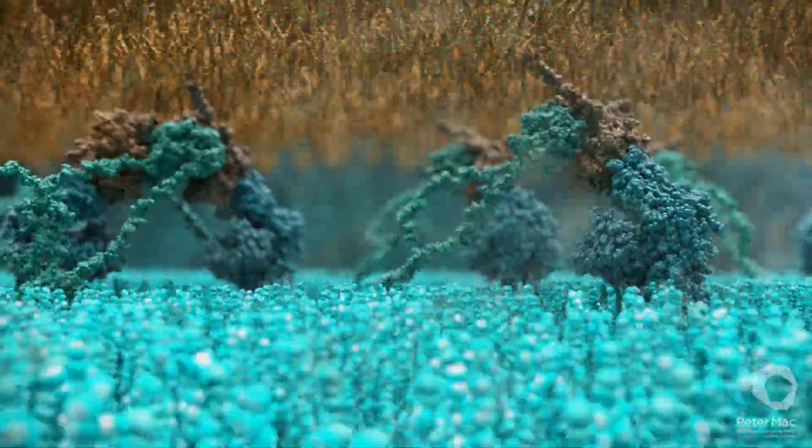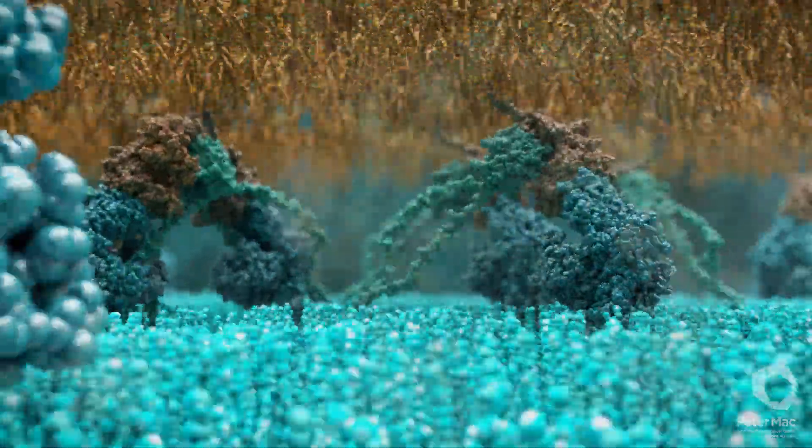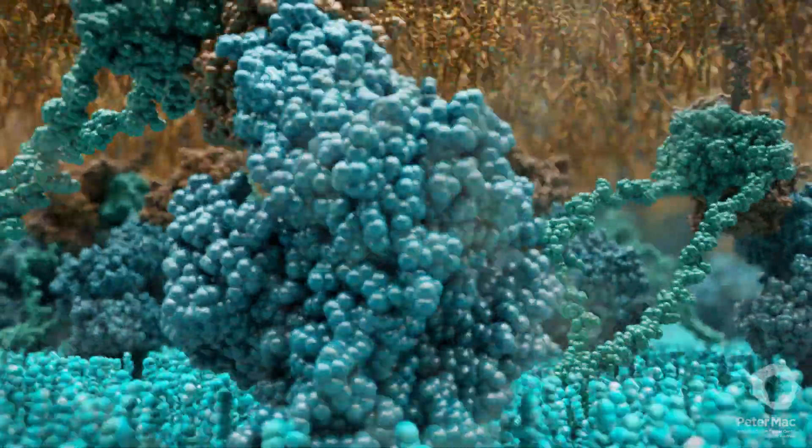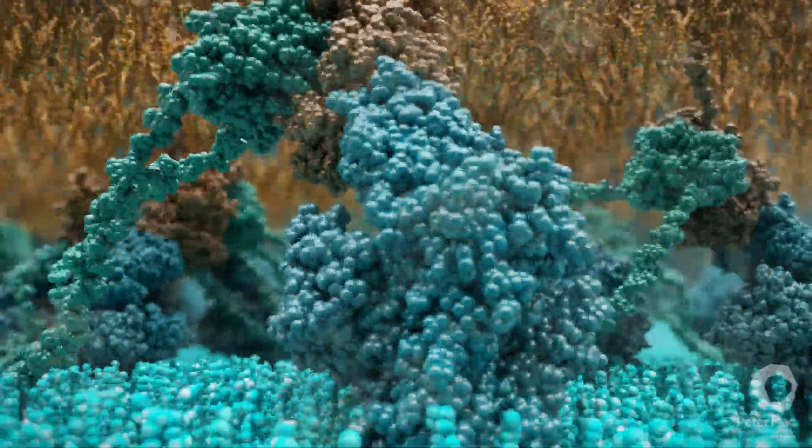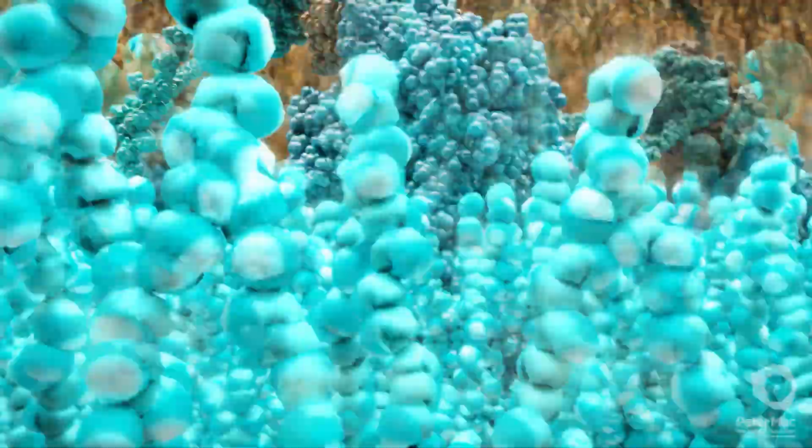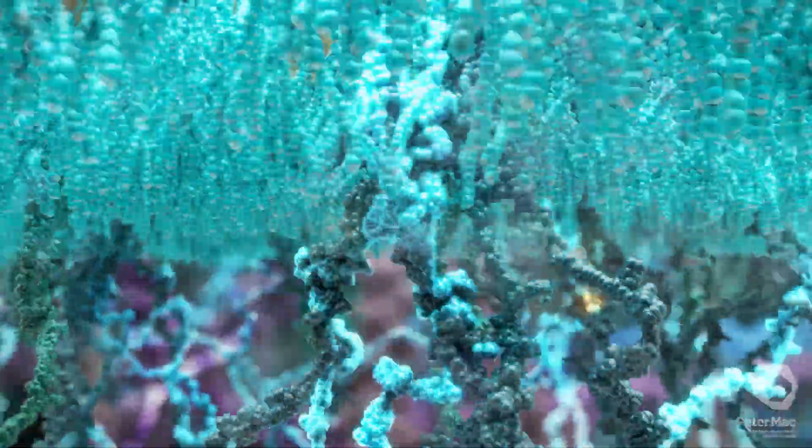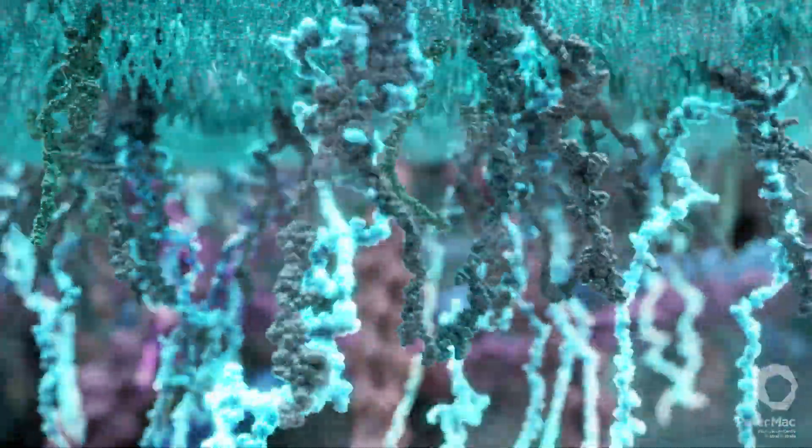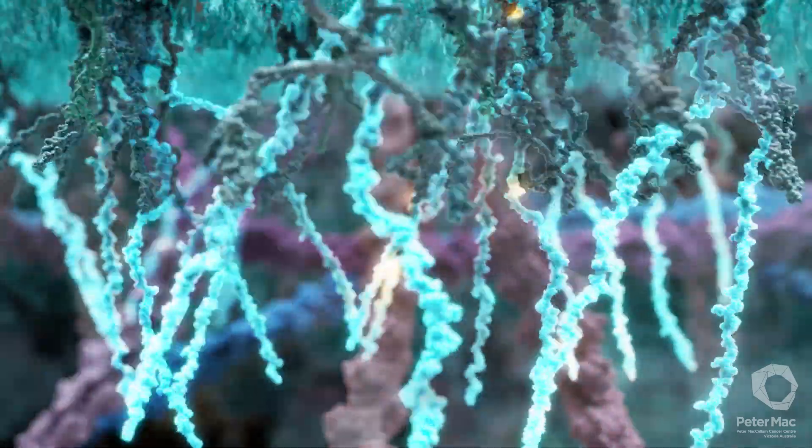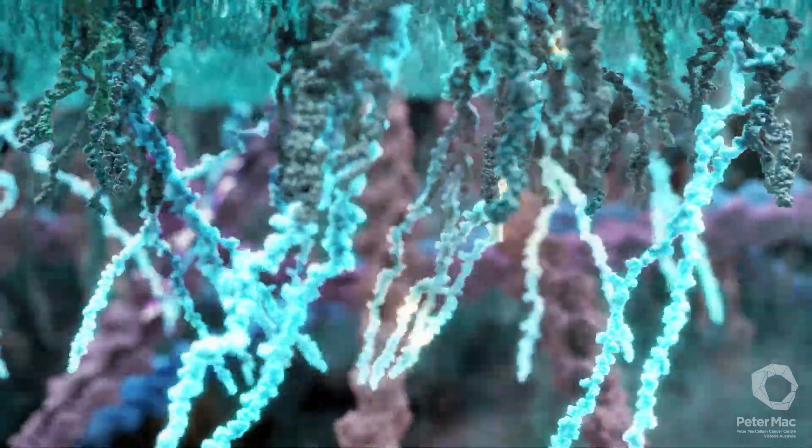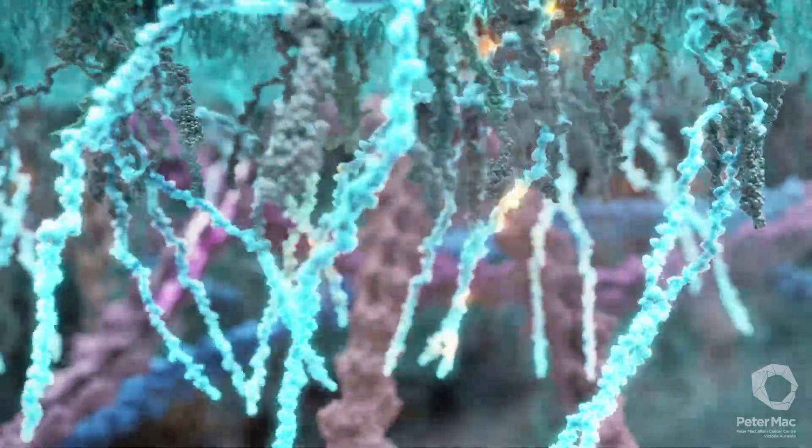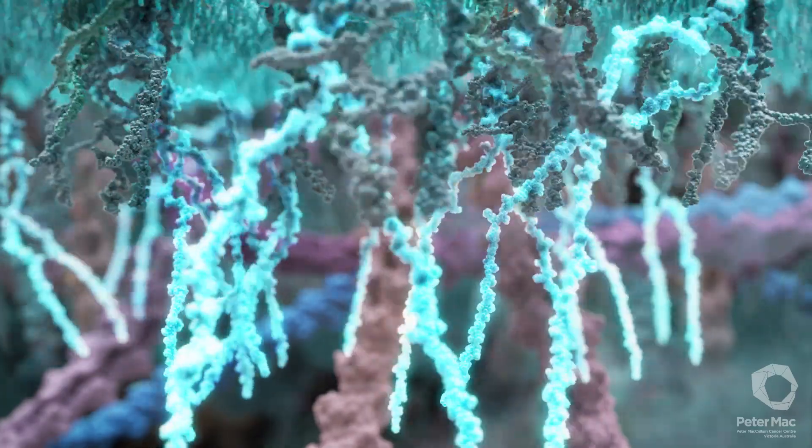After initial detection of the foreign signal, the T cell receptor assemblies then cluster together. We will now move below the cell surface, inside the killer T cell. These long glowing chains form the internal part of the T cell receptor. These chains begin the complex signaling process that activates the killer T cell after receptor binding and clustering. The killer T cell is then ready to attack.